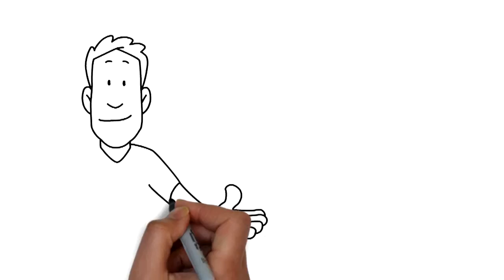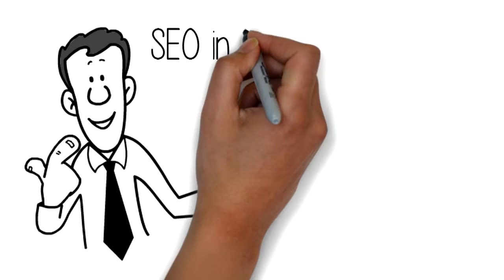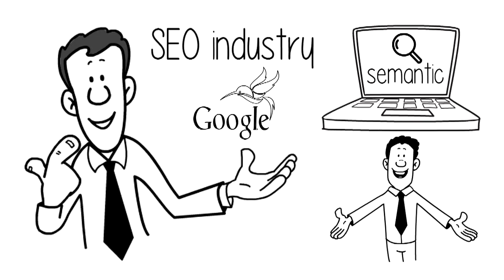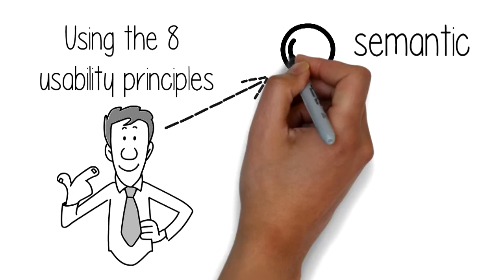The real reason why Google Hummingbird exists. A lot of the SEO industry talks about Google Hummingbird and Semantic Search, but not a lot of us know what it is. Using the eight usability principles, Gerald will be explaining what Semantic Search is and how Google Hummingbird fits into this.